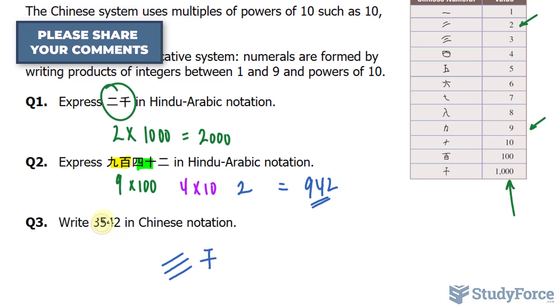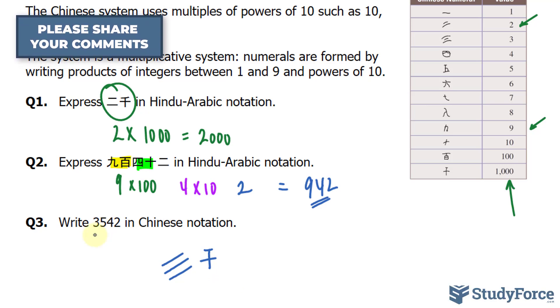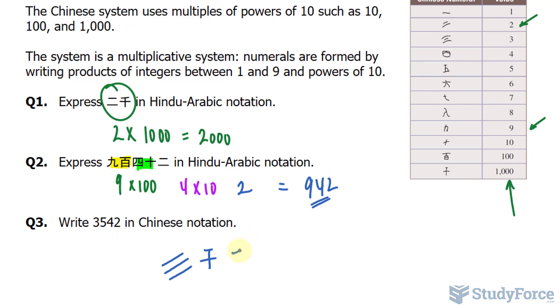To represent 500, which is the next place value, the hundreds, we will write down the symbol for 5, and we need to multiply 5 by 100, shown right there.